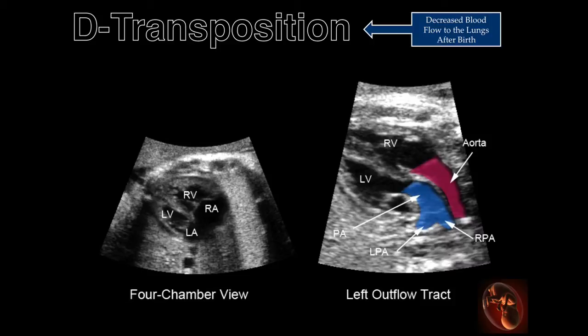D-transposition is recognized prenatally when the outflow tracts are carefully examined. The normal crossover of the pulmonary artery and aorta is not seen, and the outflow tracts appear to run parallel to each other. The left outflow tract demonstrates the vessel exiting the left ventricle to be the pulmonary artery, bifurcating into the right and left pulmonary arteries. The aorta, originating from the right ventricle, is parallel to the main pulmonary artery.